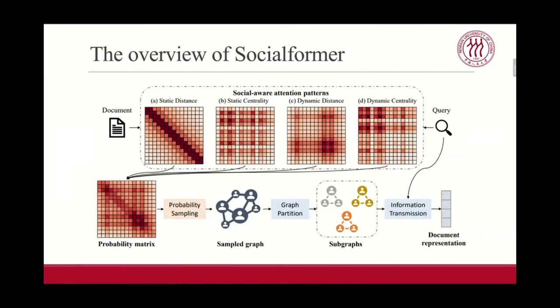The social aware attention patterns include: first, static distance. We believe the further the distance between two words, the lower the probability that they have semantic dependency. And the second is static centrality. We believe each word in the document has a different contribution to expressing the semantics of the document. We attempt to extract the celebrities in the document and highlight their influence. The third is dynamic distance. Given the query, we assume that query terms contained in the document are more critical for document modeling, and their surrounding words in the document are usually more informative for the query. And the final is dynamic centrality. Some infrequent words will play an important role in semantics when matching with the query. So we apply a BERT-based model and use the attention weights to reflect the contribution of each word.